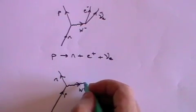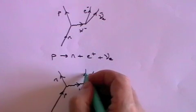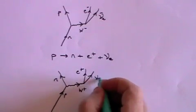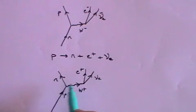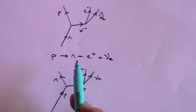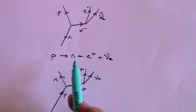And then the W plus boson quickly decays into a positron, plus an ordinary neutrino. And that's the Feynman diagram for the proton changing into a neutron.